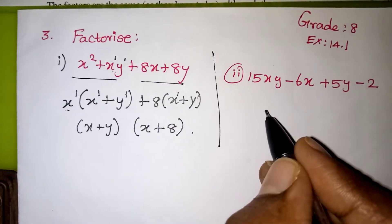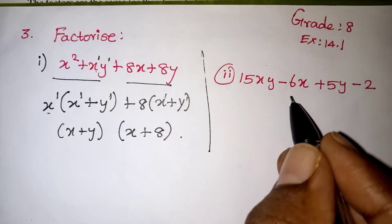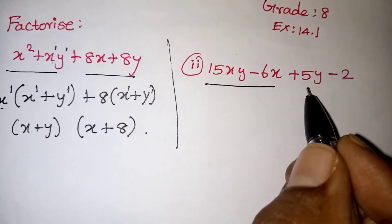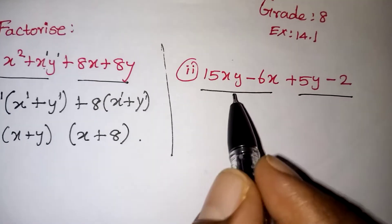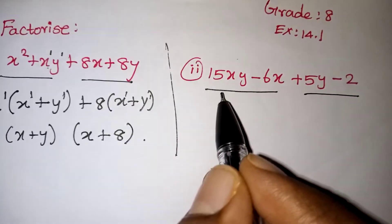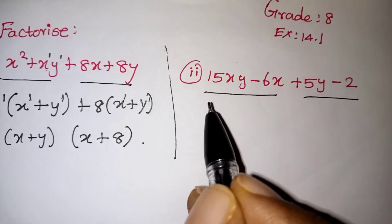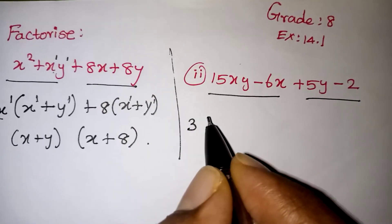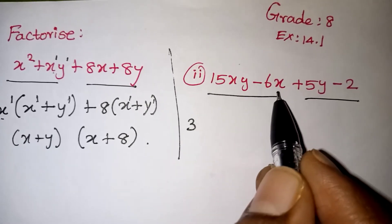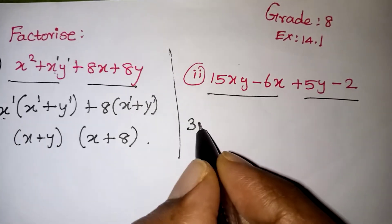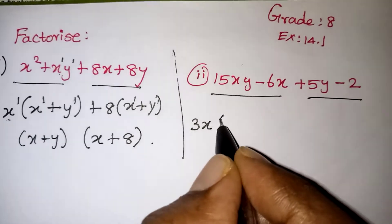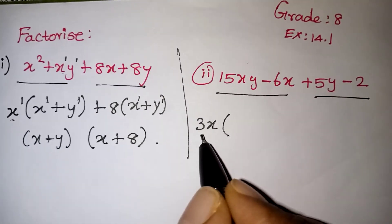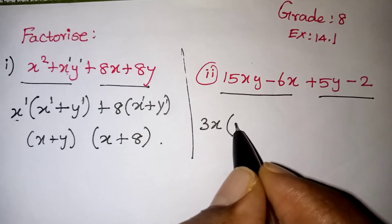Now look at the second problem: 15xy − 6x + 5y − 2. Again there are four terms. We pair the first two terms and the last two terms. For 15 and 6, both appear in the 3 times table, so we take 3 outside. Also, x is common in xy and x, so we take 3x outside.